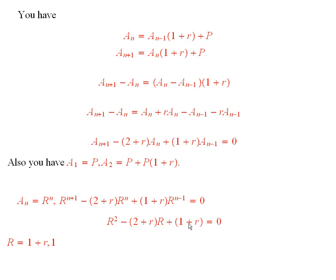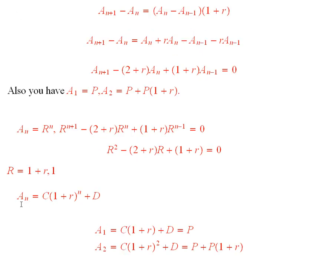And there are exactly two solutions to this quadratic equation. Capital R equal to 1 plus little r, and 1. So the solution that we're looking for to the recurrence relation will be some constant times 1 plus r to the n plus another constant d times 1 to the n.